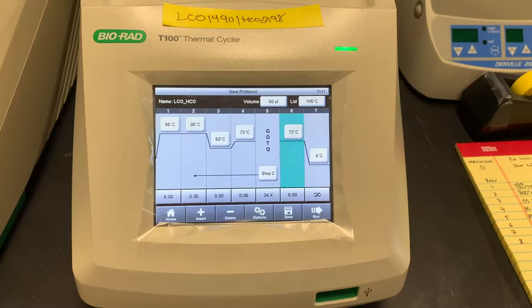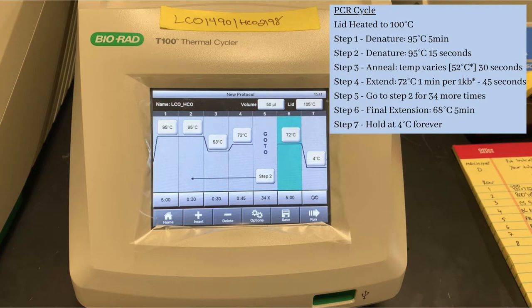Denaturation where the double-stranded DNA unwinds, annealing where the primer is attached to the template DNA, and extending where the new strand of DNA is made. These three stages are repeated, doubling the number of DNA copies on each cycle.